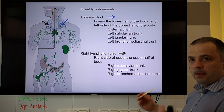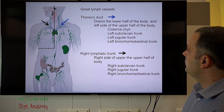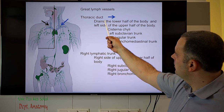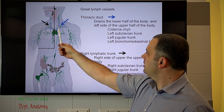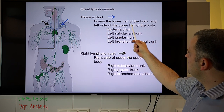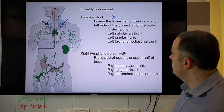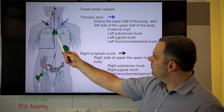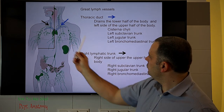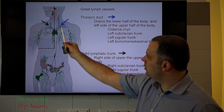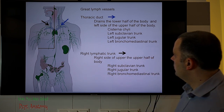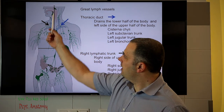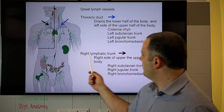The thoracic duct is one of the main lymphatic vessels, draining the lymph fluid from the larger part of the human body. It starts with the cisterna chyli in the abdominal cavity, and also collects the subclavian trunk, the left jugular trunk, and the bronchomediastinal trunk which drains the thoracic organs. On the right upper part of the body, we have the right lymphatic trunk.